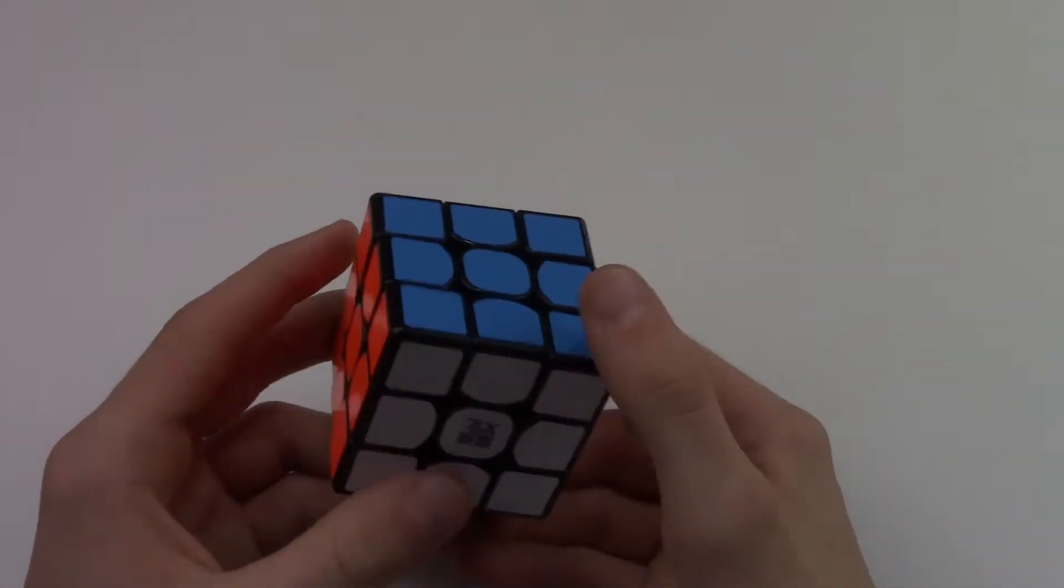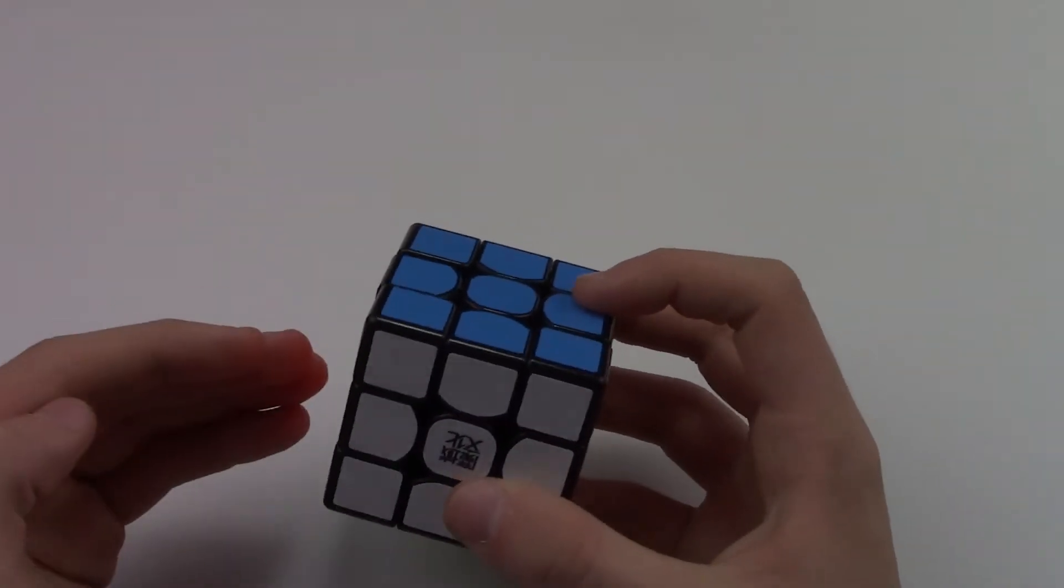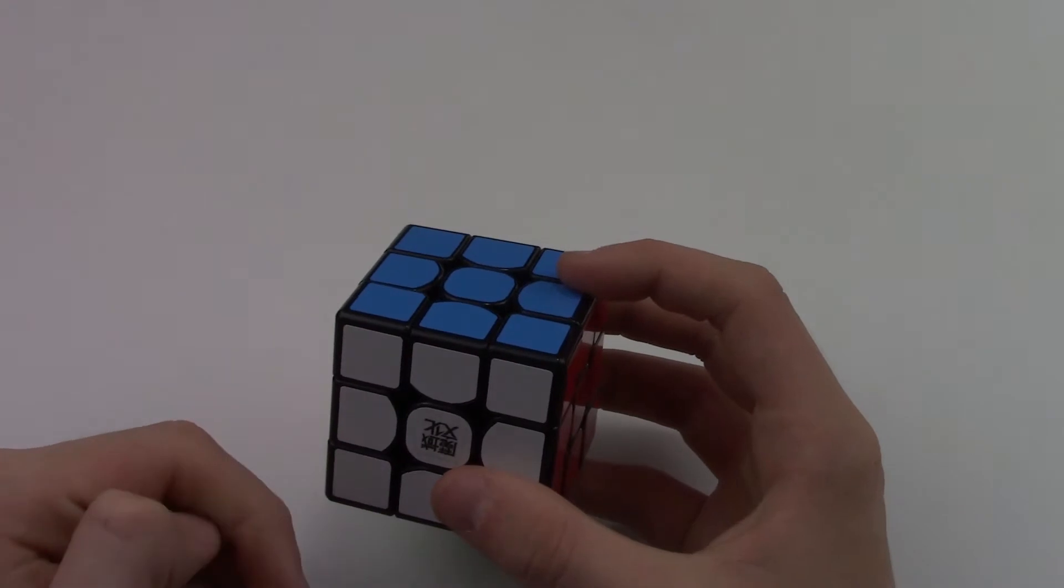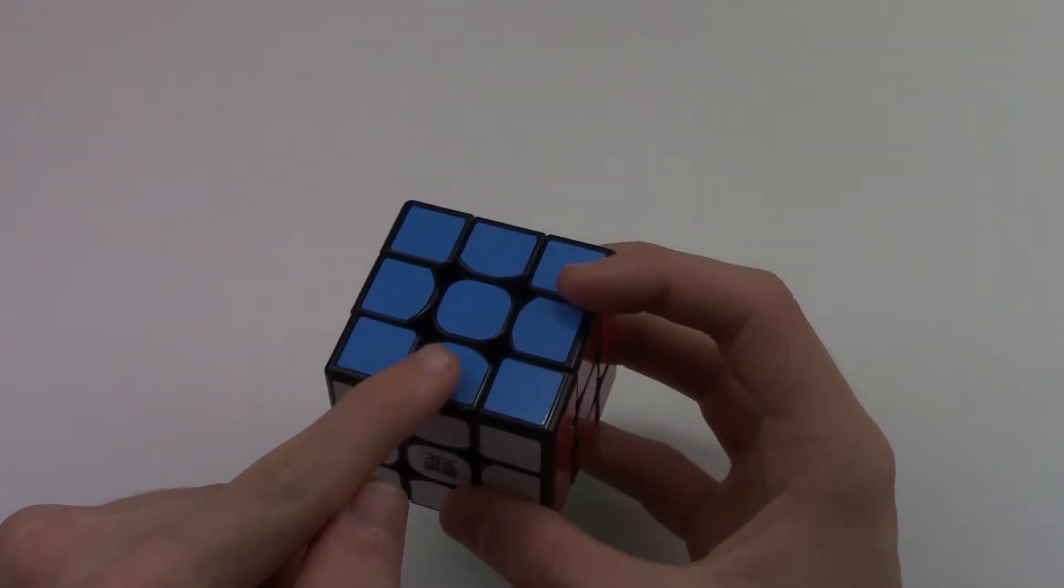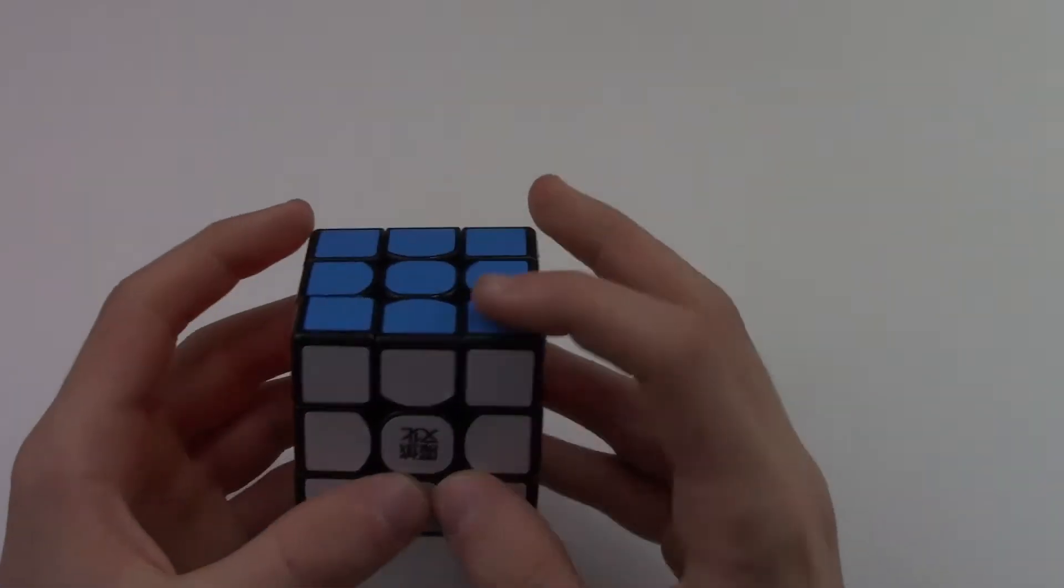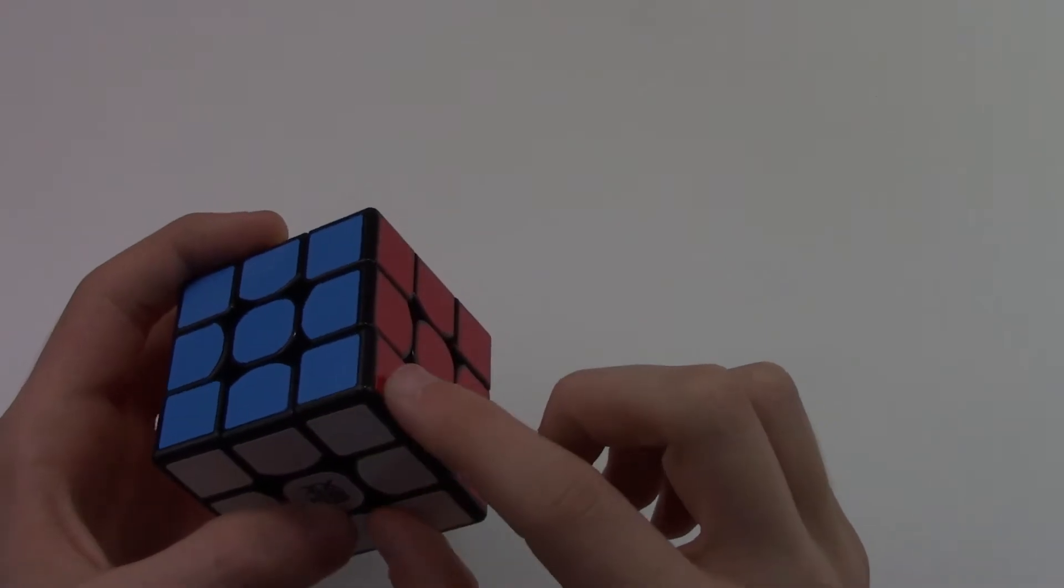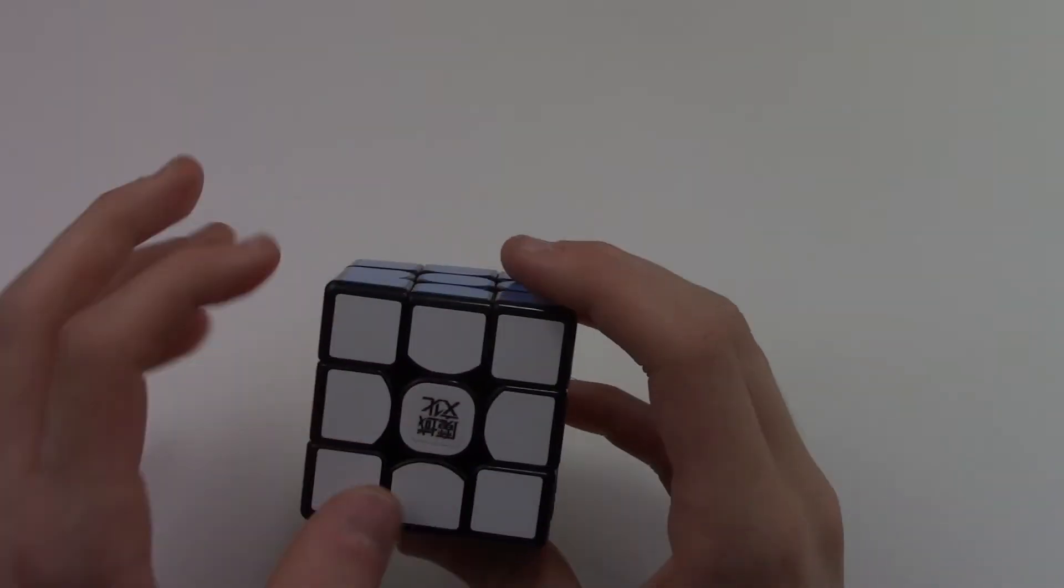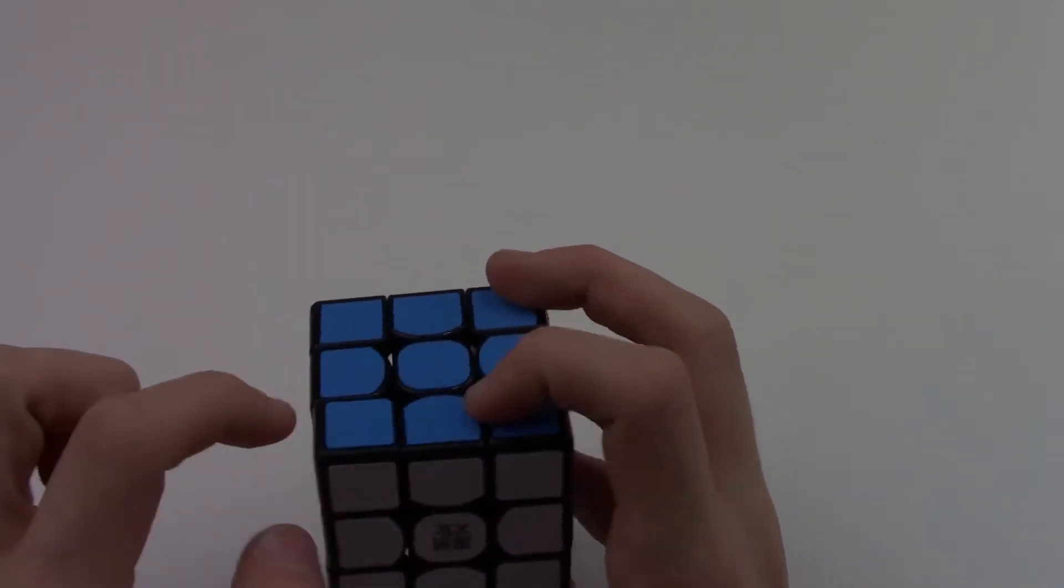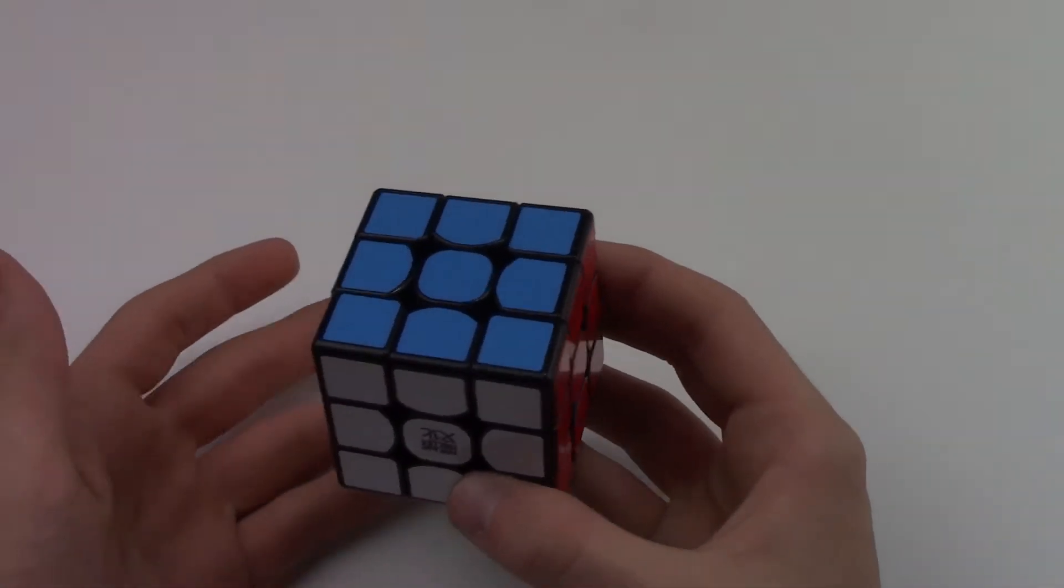Alright guys, so let's get right into this thing. So let's start off with the recognition of this puzzle. Now the recognition is these pieces are called the edges that only have two stickers on them. The corner pieces are the pieces with three stickers, and the centers are just the ones in the middle. Now I'm assuming you know this basically because you should already know beginner's method.